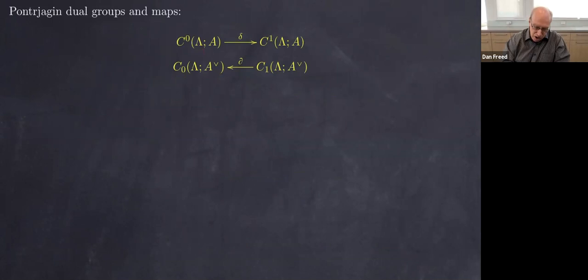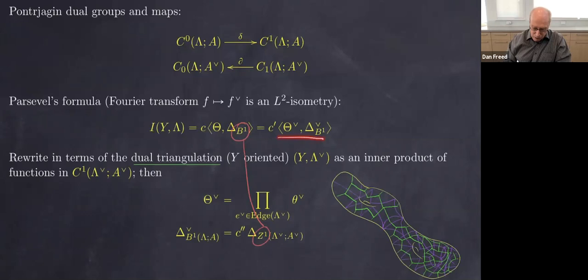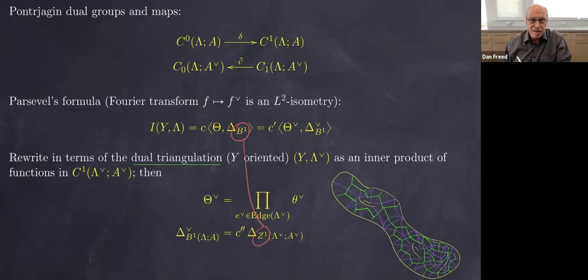We use the Fourier transform and Parseval's formula to say the inner product equals the inner product of the Fourier transforms (up to constant). The Fourier transform of the weighting function theta — this little function theta on the group — gets exchanged with its Fourier transform on the Pontryagin dual group; we're heavily using the abelian group structure here. The Fourier transform of the other function — essentially the characteristic function of boundaries — becomes the characteristic function of co-cycles. So boundaries and co-cycles get interchanged.